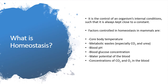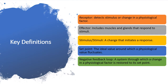Homeostasis is defined as the control of the internal conditions in an organism such that everything is around a set range — basically kept close to a constant. Examples include core body temperature, metabolic wastes, blood pH, blood glucose concentration, and water potential of the blood. The key ones for this chapter are body temperature (thermoregulation), blood glucose concentration, and water potential of the blood.